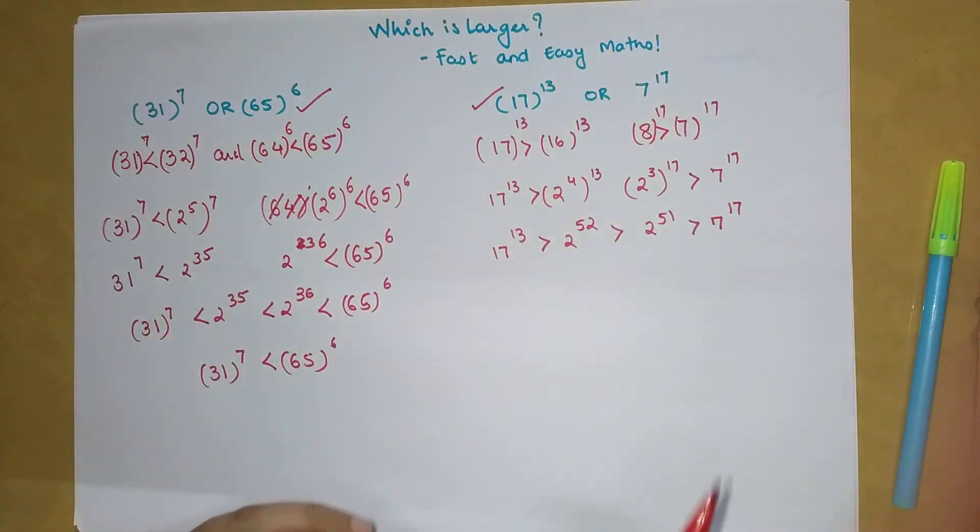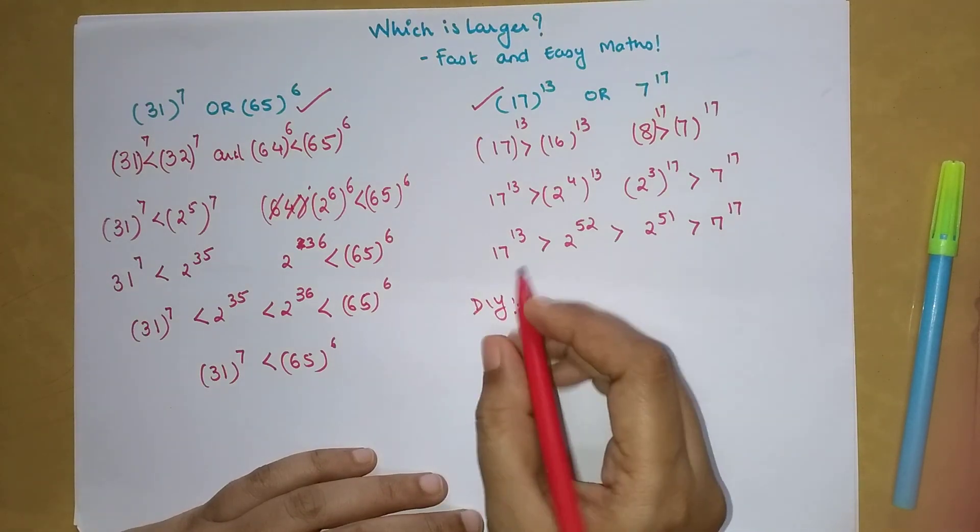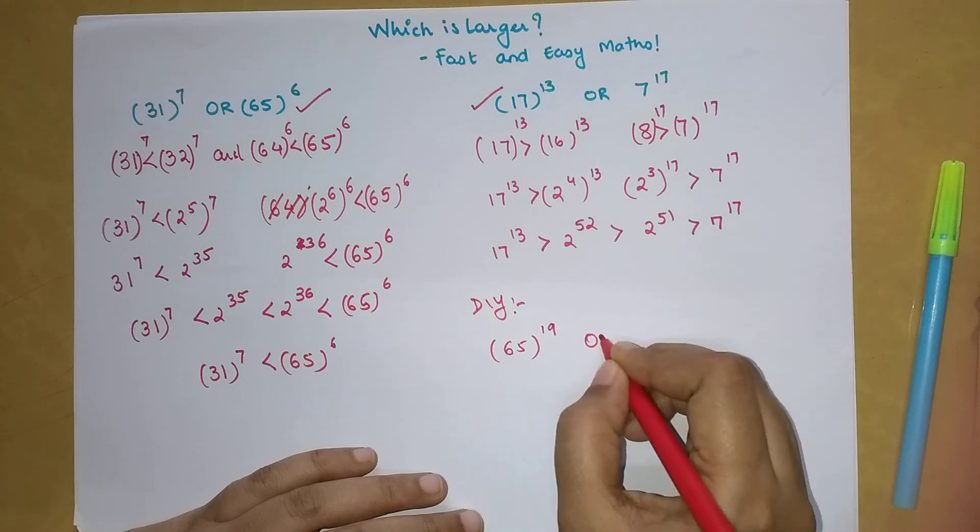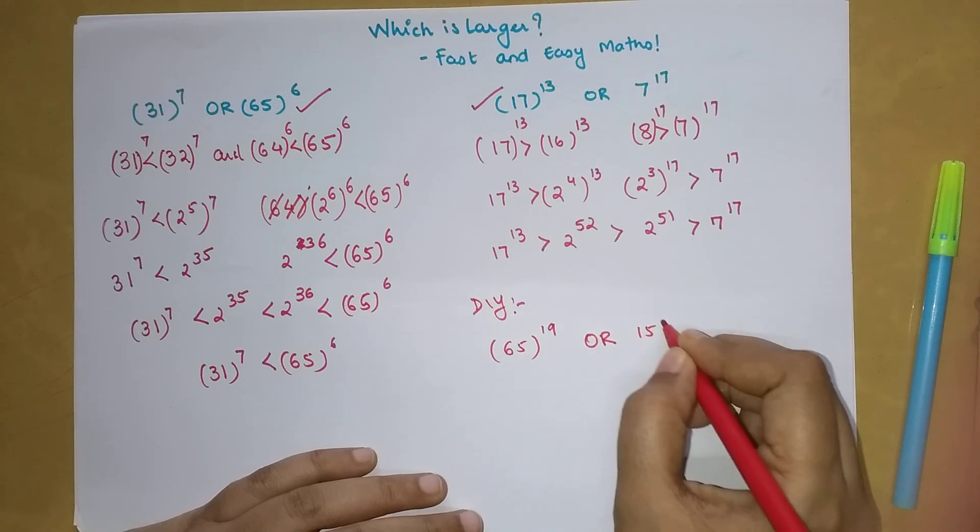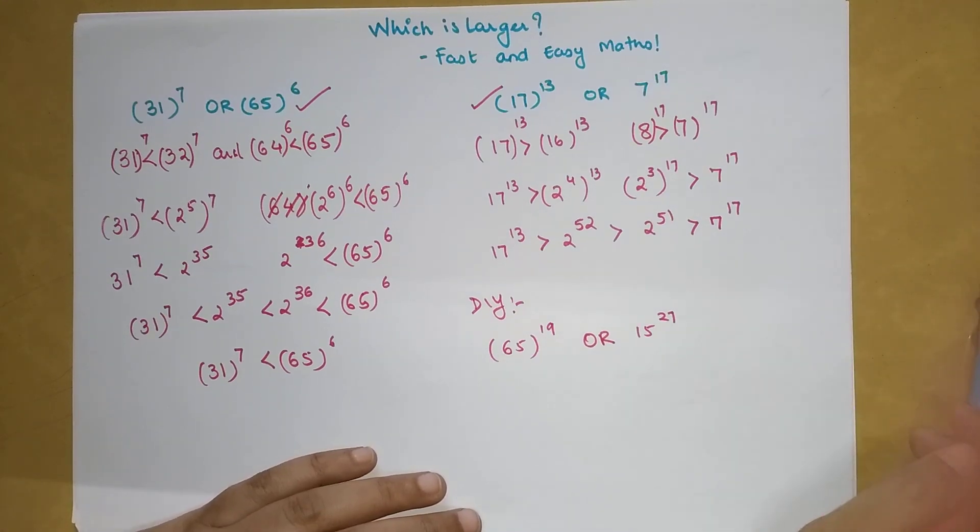So this was the basic trick. Now time for your DIY: 65 the whole raised to 19 or 15 raised to 27. Let me know your answers in the comment section. That's it for now, I'll very soon see you in the next video.